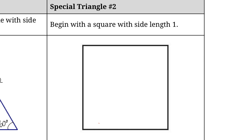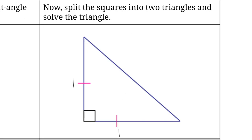Now let's look at our second special triangle. We're going to start with a square with a side length of 1, so that means all four sides are equal to one unit. Now let's split this triangle in half diagonally to create two right triangles. We have our right angle in the corner and these two angles — well if we take 90 degrees and split that in half, we're going to get 45 degrees. So both of these angles are 45 degrees, and this is our 45-45-90 triangle. We know these two sides are one unit from the square we cut in half, and we can use the Pythagorean theorem to find the hypotenuse.